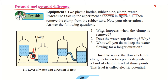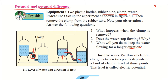When the clamp is removed, water flows from the bottle at the greater height through the rubber tube into the bottle at the lower level. After a while, the water stops flowing once both bottles reach the same water level. To keep the water flowing for a longer duration, you would need to increase the height of the upper bottle.